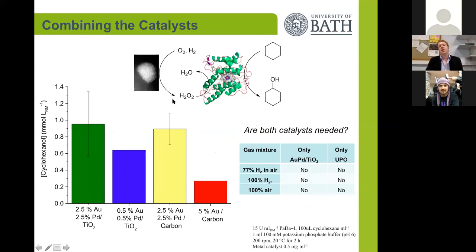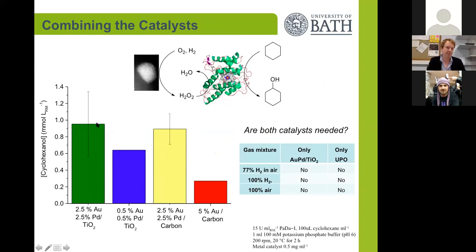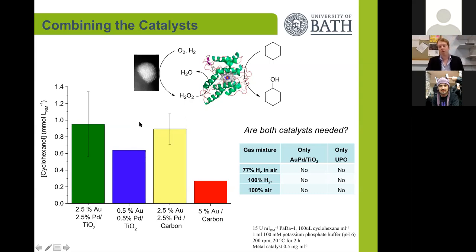We then coupled the whole system together: we took a range of gold-palladium catalysts, fed them hydrogen and oxygen in an aqueous solution at ambient temperature and pressure, in the presence of the peroxidase enzyme and cyclohexane. In almost all the cases that we tried, we were able to detect cyclohexanol as a product. We did lots of control experiments to prove that this wasn't coming from the metal catalyst or the presence of hydrogen peroxide alone as a background reaction.